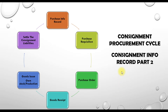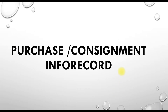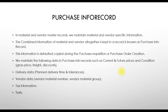What is a purchase info record or consignment info record? When we create material and vendor master records, we maintain material and vendor specific information in those records. However, the combined information of material and vendor together is kept in a record which is known as the purchase info record. This information is defaulted and copied during purchase order creation.